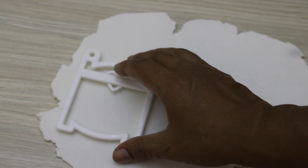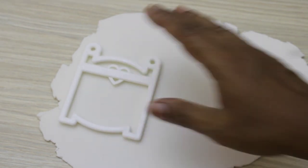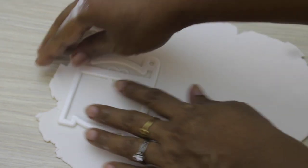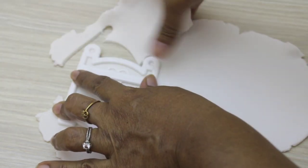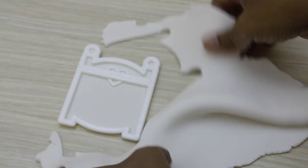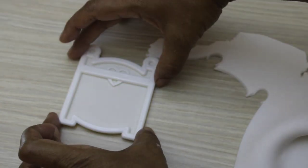First I am using this one and I am cutting two of them. Press nicely and remove excess fondant and remove the cutter. So we remove this one.